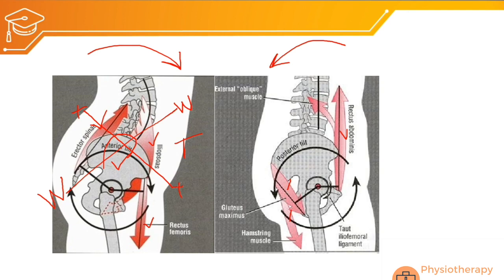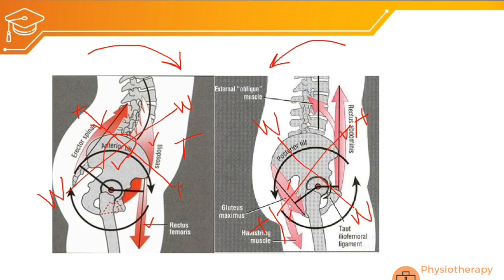This posture can be corrected by strengthening the abdominal and gluteal muscles and stretching the hip flexors and lumbar extensors. Abnormal posterior pelvic tilt occurs due to contracture of rectus abdominis and tightness of hamstrings and gluteals, with weakness of hip flexors and lumbar extensors — this is posterior tilt lower cross syndrome. However, anterior tilt lower cross syndrome is more common.